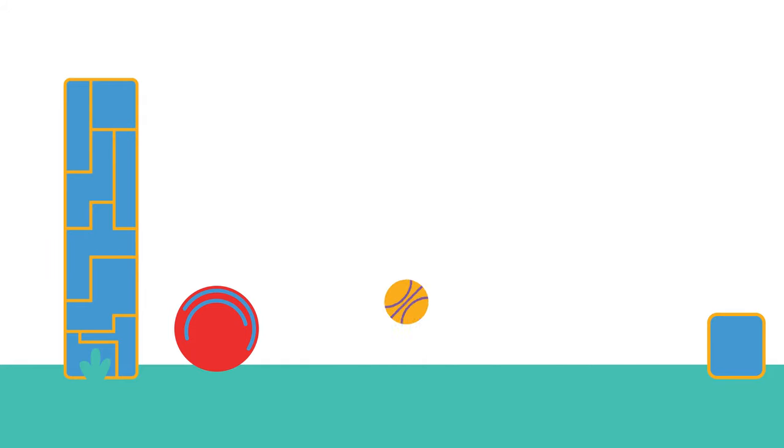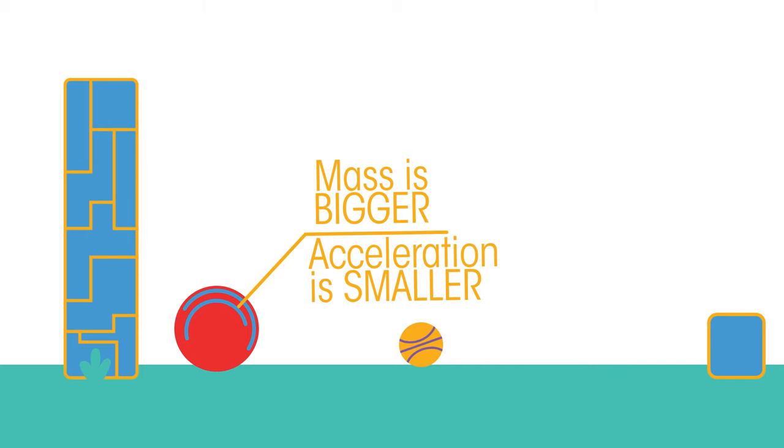So why do you think you can throw a tennis ball much faster than a shot put? Because the force from your arm is the same. But the mass of the shot is much bigger. So its acceleration will be smaller.